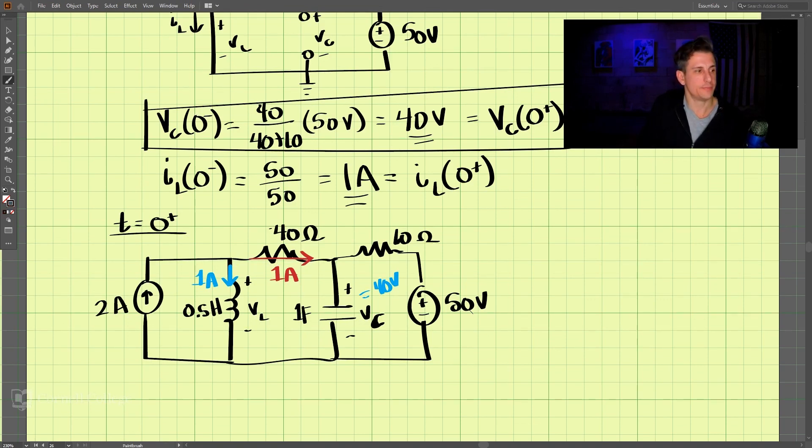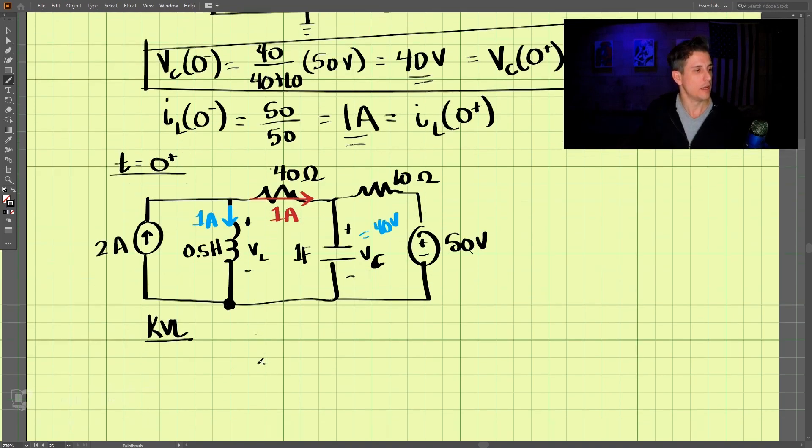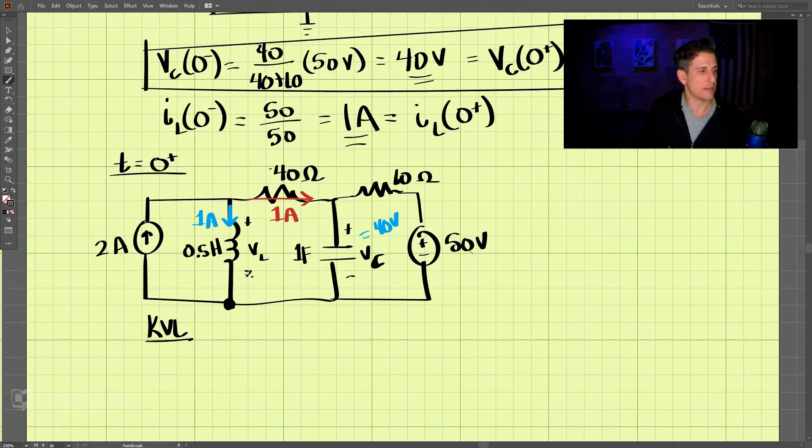Okay, so let's perform KVL around this loop starting right here. So we go from negative to positive, that is negative VL. And then we have positive to negative, that is 1 amp times our 40 ohms. And then from here to here, we know that's positive to negative, so that's positive, and that is 40 volts. And that gets us around the loop, and we know that is equal to 0.